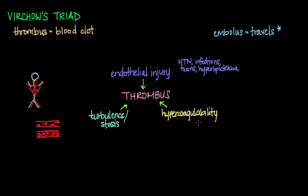Any alteration in the coagulation pathways will predispose to thrombus formation. These causes can be divided into primary or innate causes — such as genetic mutations in clotting factors or prothrombin genes, with Factor V Leiden mutation being one of the most common examples — and secondary or acquired causes, such as development of a heart arrhythmia like atrial fibrillation.